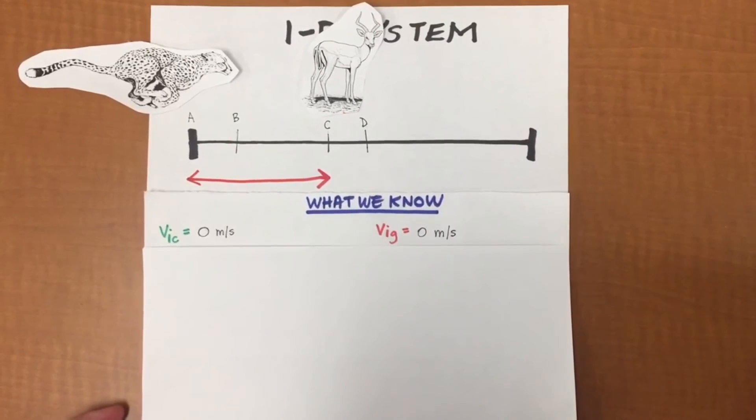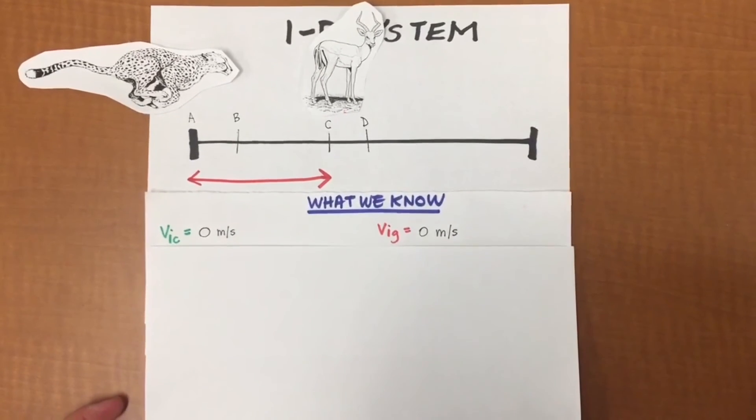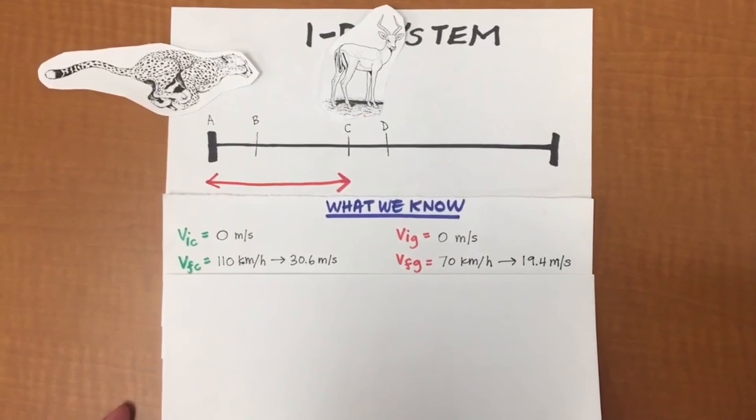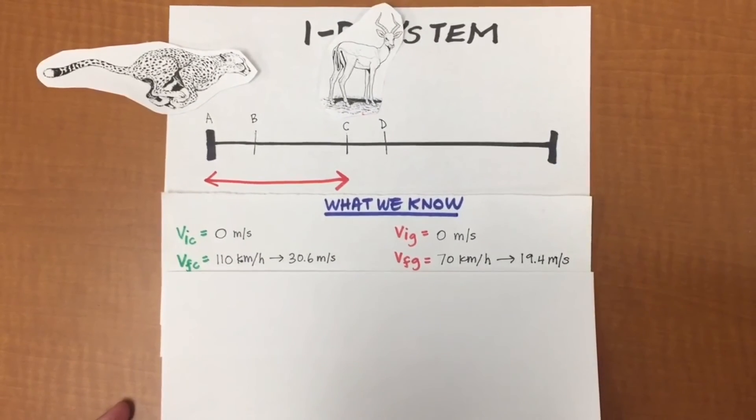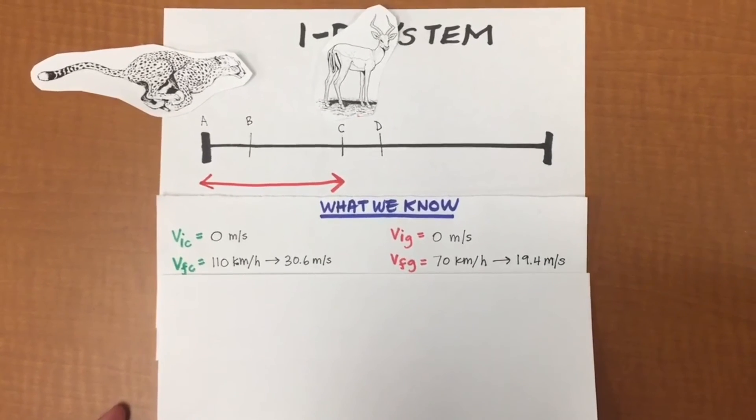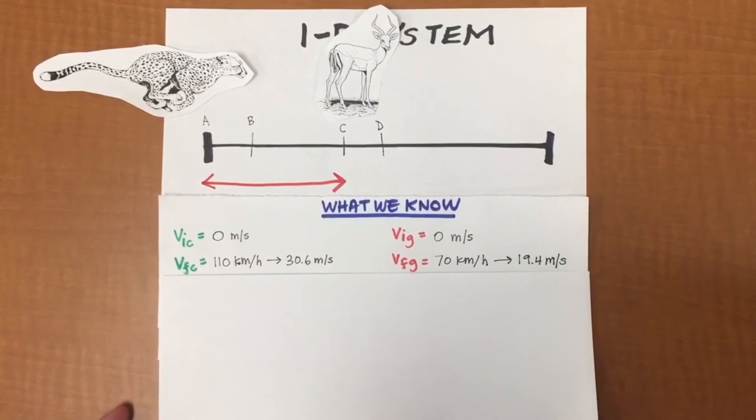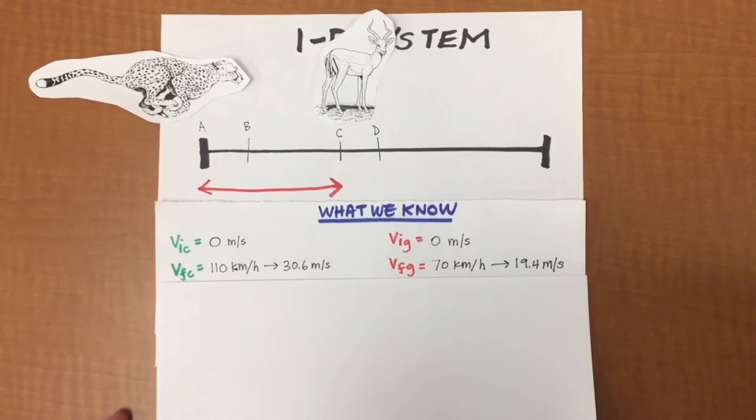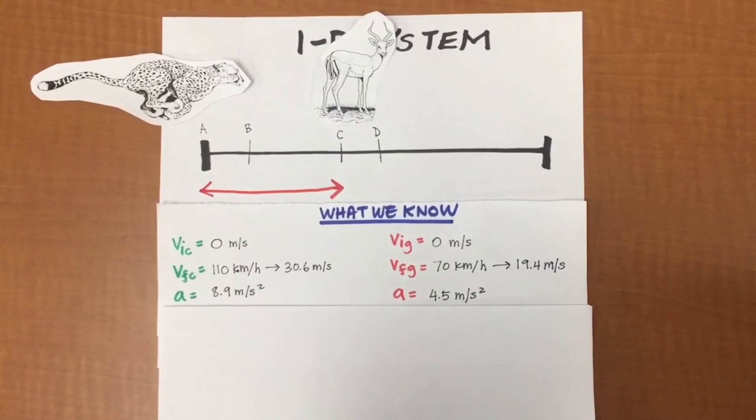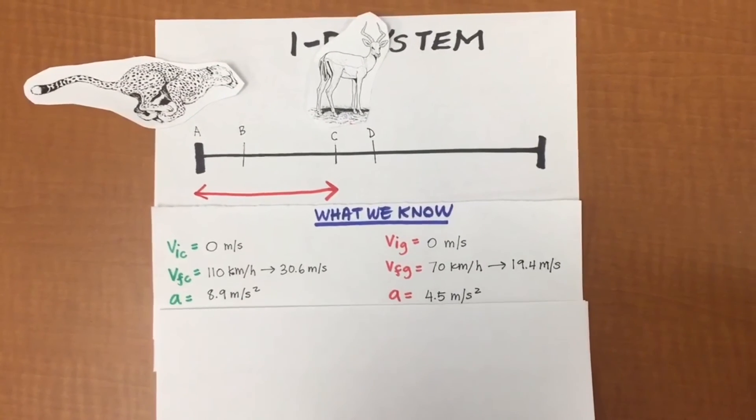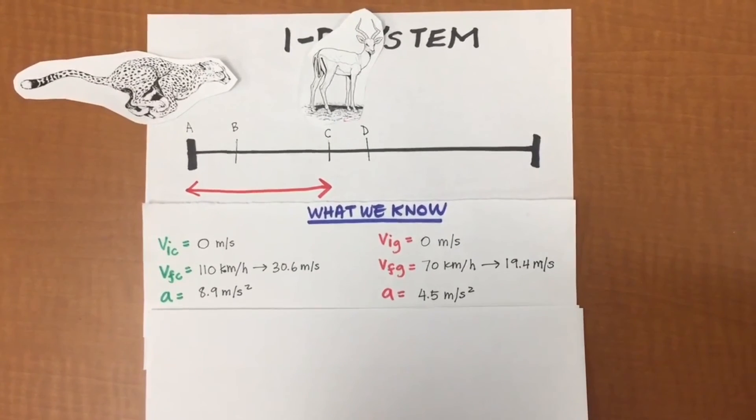Now what do we know? Well, we know that both animals start at rest, which means that their initial velocities are both zero meters per second. We know that a cheetah's maximum velocity when running at full sprint is 110 kilometers per hour or 30.6 meters per second. We know that a gazelle's maximum velocity when running at full sprint is 70 kilometers per hour or 19.4 meters per second. We know that a cheetah can accelerate at 8.9 meters per second and we know that a gazelle can accelerate at 4.5 meters per second.